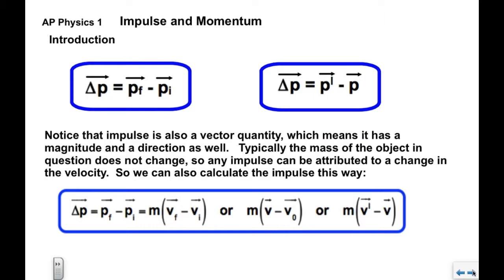Notice that impulse is also a vector quantity, which means that it also has a magnitude and a direction. Now, typically in any interaction, the mass of the object in question doesn't change. So any impulse, any change in momentum, can be attributed to a change in the velocity. So we can also calculate the impulse this way. There's a series of formulas here.